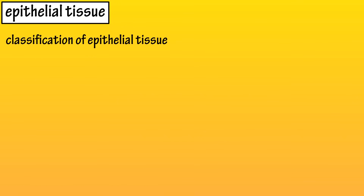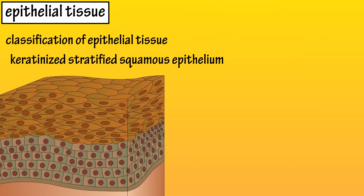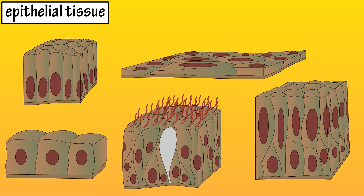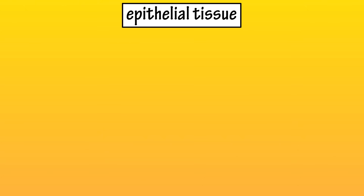There is also what is termed keratinized stratified squamous epithelium, in which the top superficial layers of cells are dead. As new cells are produced in the basal bottom region, they migrate to the top and produce a protein called keratin. These cells fill with the keratin, which makes them very strong, but they lose their organelles and nuclei and die. The epidermis, or outer layer of the skin, consists of keratinized stratified squamous epithelium. As you can see, epithelial tissue and its cells have many different forms that fit its many different functions in the body, and that covers the basics on epithelial tissue.